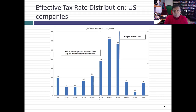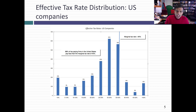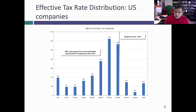Now let's look at effective tax rates, starting with the U.S. where the marginal tax rate was 40%, the highest in the world. If you look at effective tax rates paid by U.S. companies during the trailing 12 months leading into 2017, almost 88% of U.S. companies pay effective tax rates that are less than the marginal tax rate. Very few U.S. companies pay the full 40%. Some actually pay more — sometimes deferred taxes from previous years catch up — but most U.S. companies pay well below the marginal tax rate.